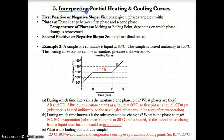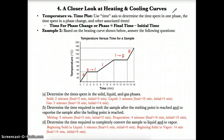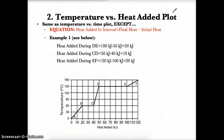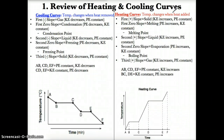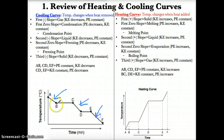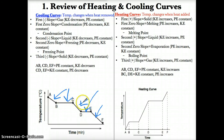For number five, interpreting partial heating and cooling curves — as we know, heating and cooling curves always have three phases. For a cooling curve, you have gas, liquid, and solid, and two phase changes: condensation and freezing.